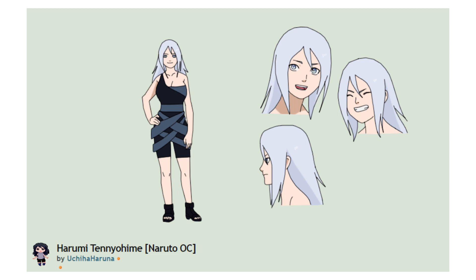Number one. Her name is Harumi Tenyohime. She's from Iwagakure and she's 26 years old. What I can say is that she has a very less of a tail and I really can't explain why she wears blue colors, because Iwagakure is known for their brown, red and yellow colors — these are the colors that every single character in the series was wearing. So now to the creator: you need to decide if you want to keep her in Iwagakure and change her colors, or maybe change the village.